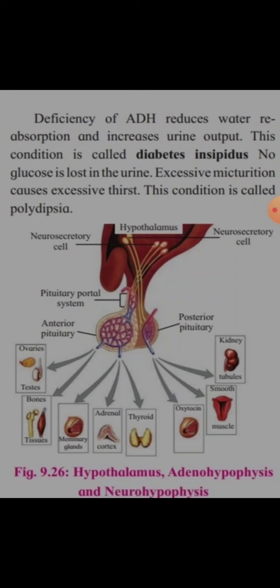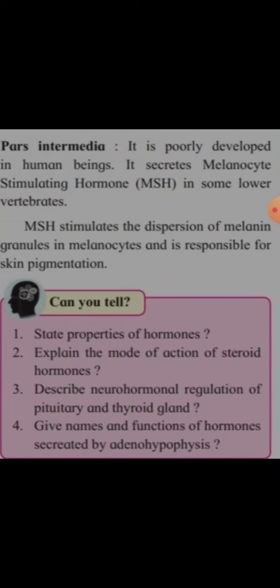The posterior pituitary gland secretes two hormones: oxytocin and ADH. Oxytocin acts on the smooth muscles of the uterus and ADH acts on the kidney tubules for the retention of water.